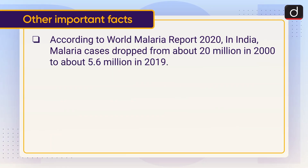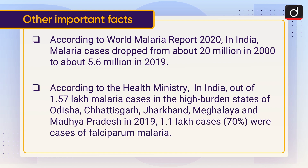According to the World Malaria Report 2020, in India, malaria cases dropped from about 20 million in 2000 to about 5.6 million in 2019. According to the Health Ministry, out of 1.57 lakh malaria cases in the high-burden states of Odisha, Chhattisgarh, Jharkhand, Meghalaya, and Madhya Pradesh in 2019, 1.1 lakh cases — i.e., 70% — were cases of Plasmodium falciparum malaria.